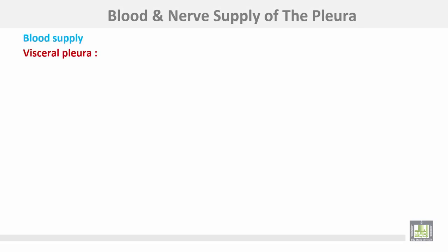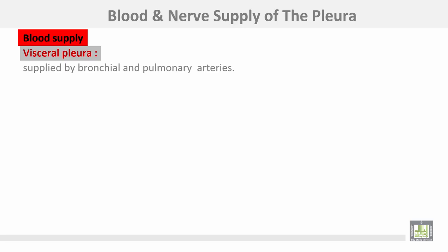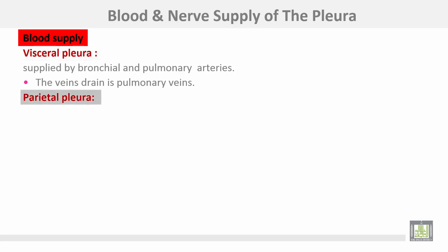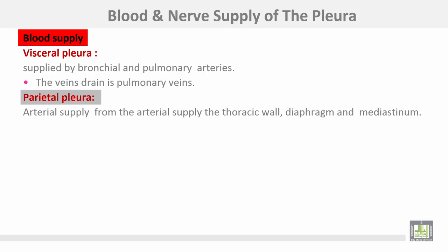Blood and nerve supply of the pleura. Blood supply: the visceral pleura is supplied by the bronchial and pulmonary arteries, and the veins drain into the pulmonary veins. The parietal pleura has arterial supply from the thoracic wall, diaphragm, and mediastinum, and its veins drain into the superior vena cava.